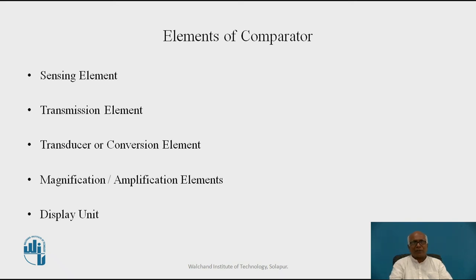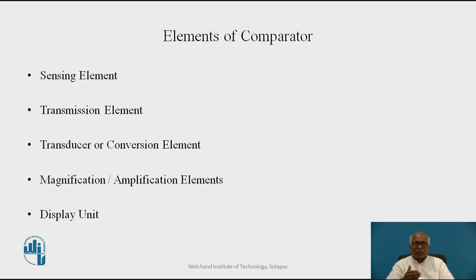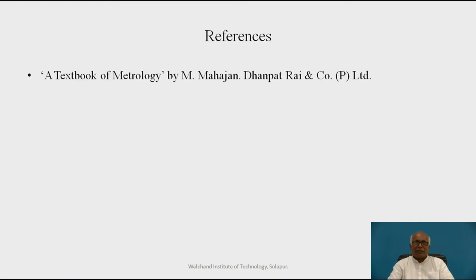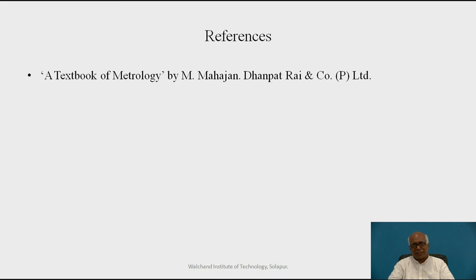Looking at the general elements of a comparator: there is normally a sensing element which senses the displacement or deviation, then a transmission element, then possibly a transducer which converts the sensed variable into another form if needed, then magnification or amplification, and finally display of the deviation. These are the general components of any kind of comparator. The reference for this material is the textbook of metrology by M. Mahajan, Dhanpatraya and Company Private Limited. This ends our preliminary discussion on comparators. Thank you.